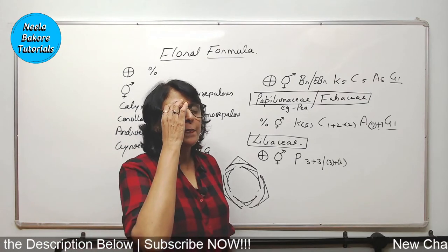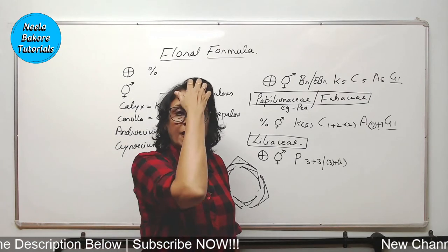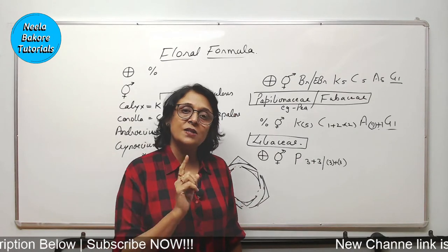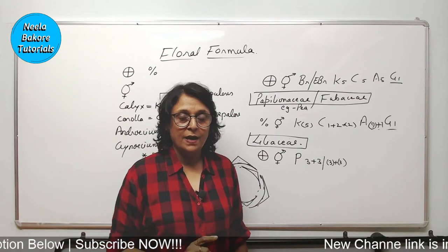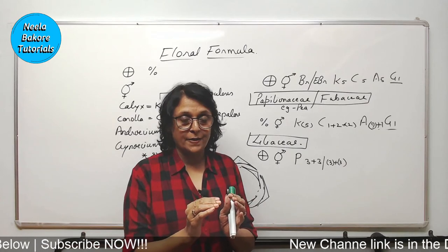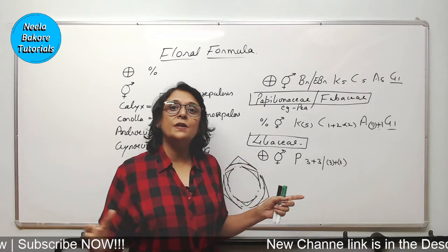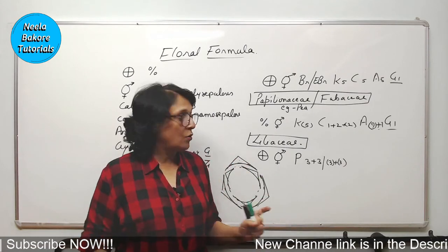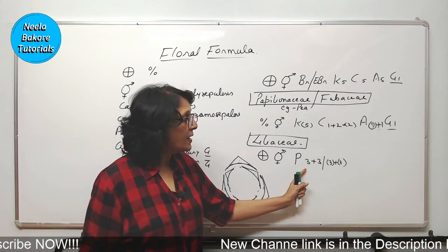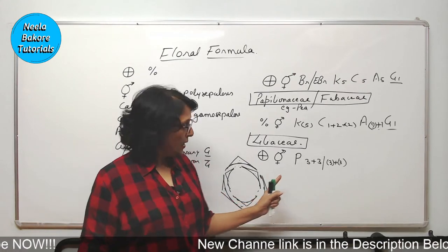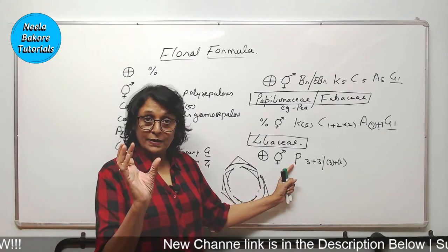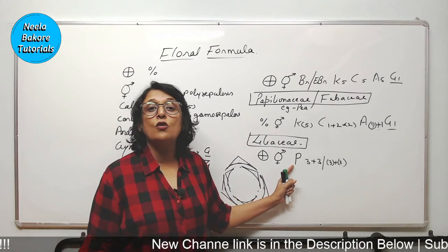Jatin, it is not parietal ovary — it is parietal placentation. We will discuss placentation separately. Right now I am talking only about the floral formula part, because we cannot discuss all concepts together. There are six tepals in two rings, and together they are called the perianth.